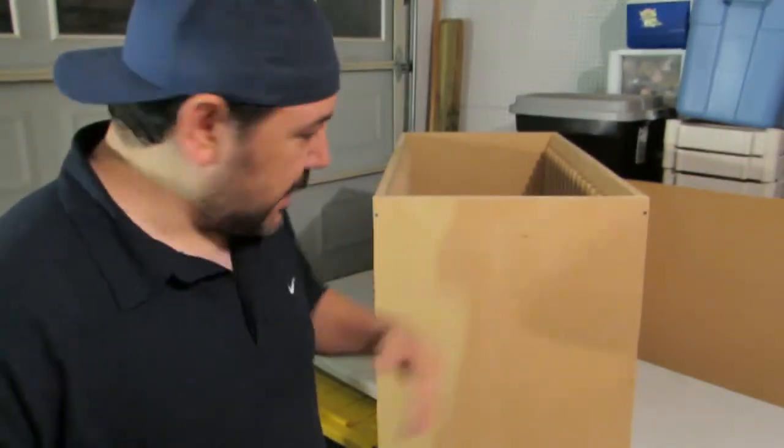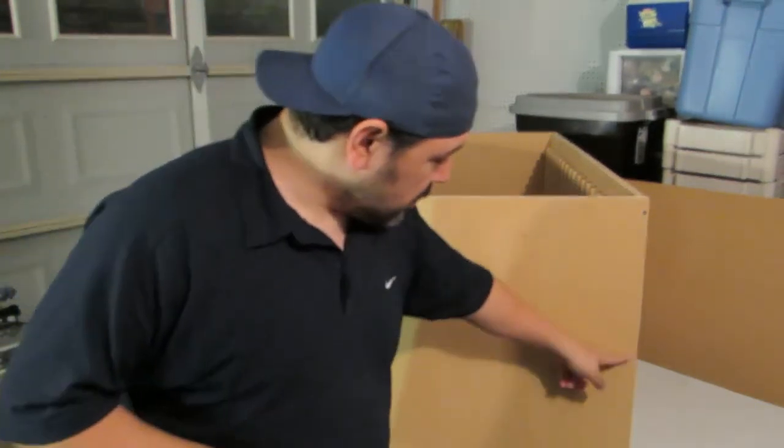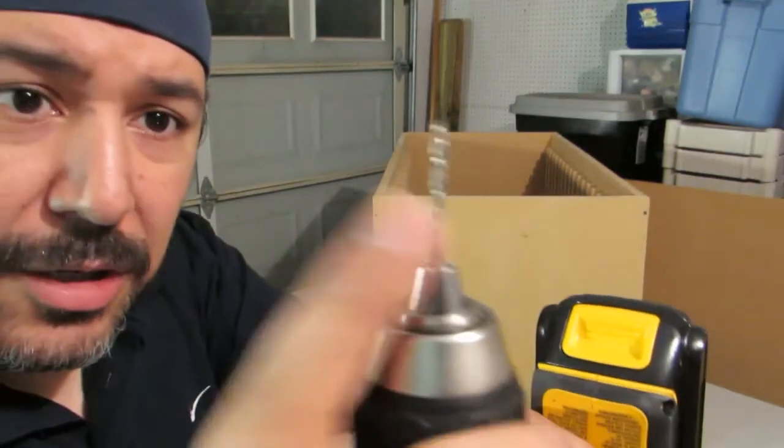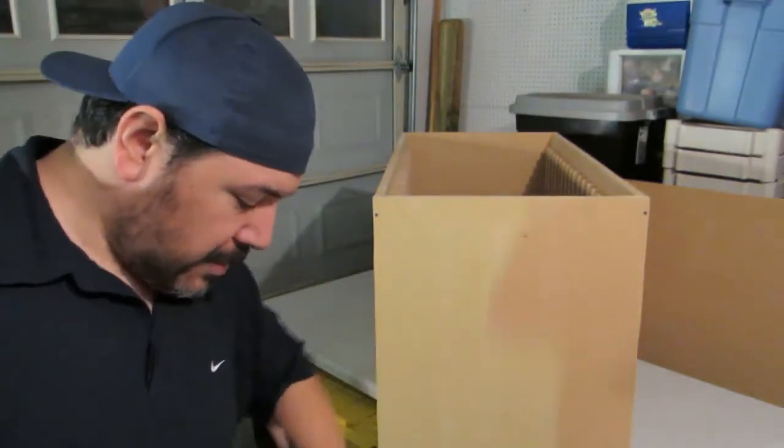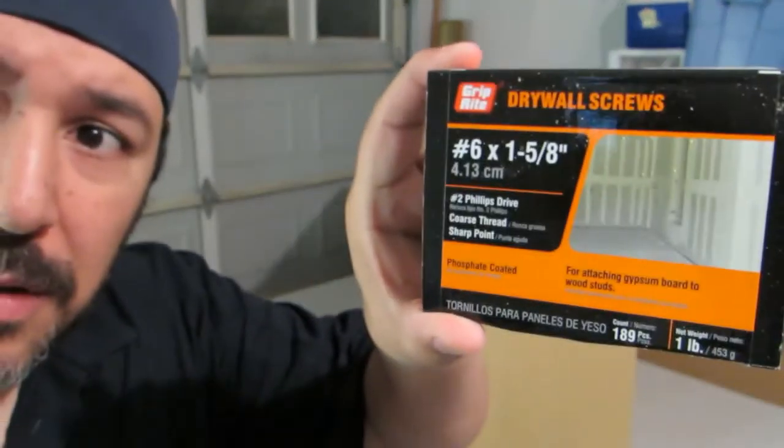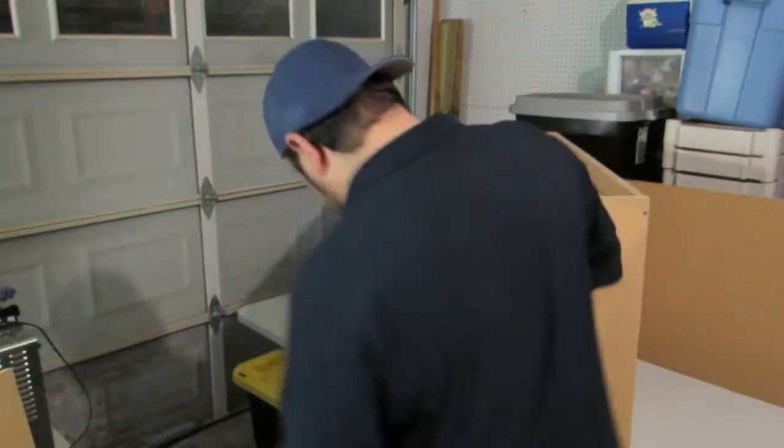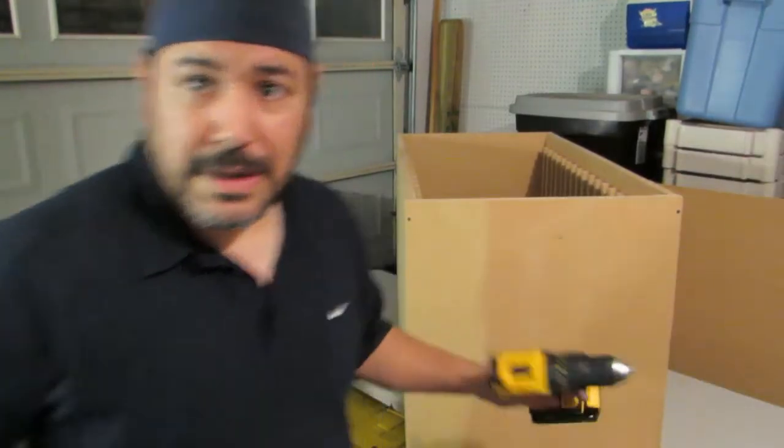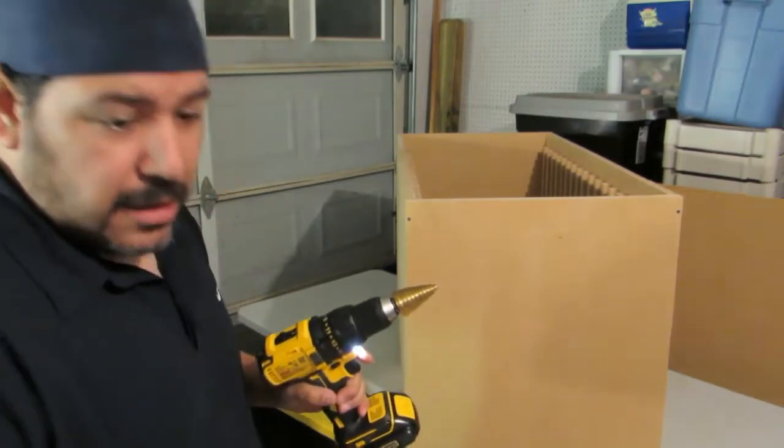I'm using a 3/32 bit, a drill bit 3/32, to make pilot holes for these screws right here, number sixes, one and five-eighths inch long. So now that we created pilot holes, we're going to use the step bit to create the hole big enough for the head of the screw to sink in. We'll see how well that does.